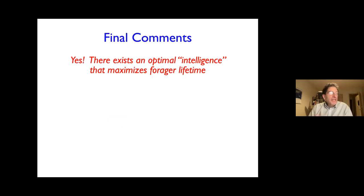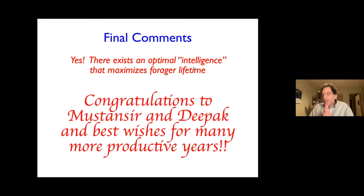So I am at the end of my talk. So the question that I posed at the beginning: does there exist an optimal intelligence that maximizes forager lifetime? And the answer, I guess, is yes. And I see Mustansir has his hand up. So actually, maybe give me—I have 30 more seconds of presentation. So then you can ask your question. So anyways, yes, there exists an optimal intelligence. And then the only last thing I want to say is, again, going back to my very first slide, I've always been very impressed with the work of Mustansir and Deepak over the years, their activity, their beautiful papers. And so all I want to say at the final is congratulations to both of you, and my best wishes for many more years of productivity. So thank you very much.